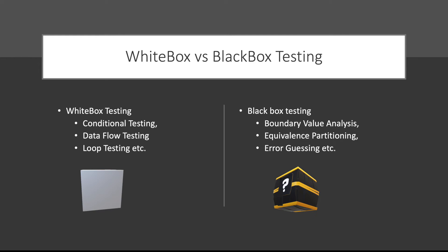In black box testing we use boundary value analysis, equivalence partitioning, and error guessing. Boundary value analysis means testing with boundary values — this is the region where we tend to find the most bugs. For example, if an elevator supports 300 kg, I would test with 299 kg, 300 kg, and 301 kg to see if it works as expected. Equivalence partitioning means partitioning your inputs to minimize the number of test cases. Again in the lift example, I can partition as 0–300 and 300–400, or use finer partitions like 0–100, 100–200, 200–300, 300–400 and choose representative values like 50, 150, 250, and 350.